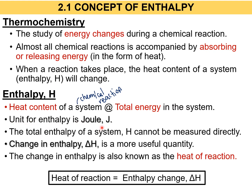The unit for enthalpy is Joules (J). The total enthalpy of a system, H, cannot be measured directly. We can only obtain the total energy or heat content in a chemical reaction by using the change in enthalpy, represented by the delta H symbol. Since we want to measure the total enthalpy of a system, the change in enthalpy will be a more useful quantity.